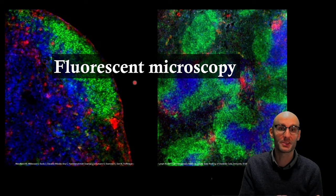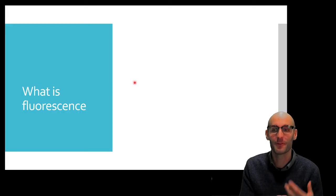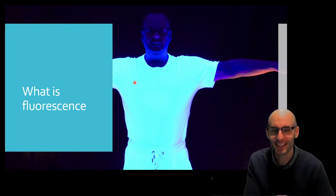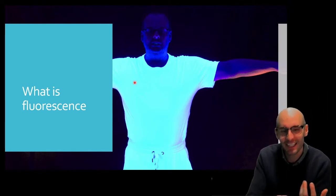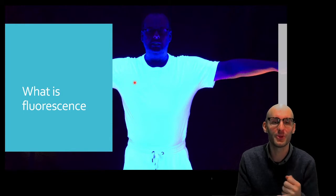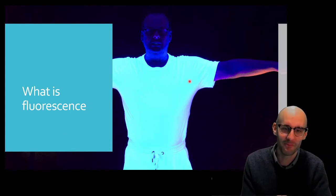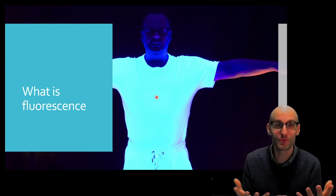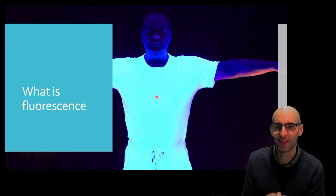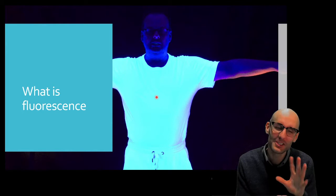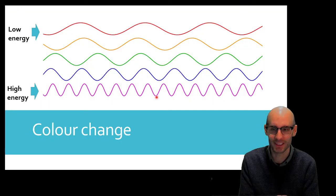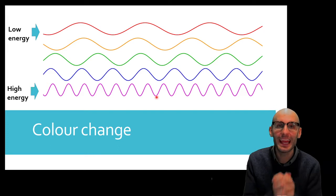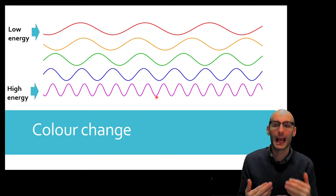To understand fluorescent microscopy, we need to understand fluorescence. So what is fluorescence? Well, fluorescence is something we've all got experience with. We've all been to the clubs, and we've all seen our white shirt glow bright blue under a black light. So we've all had some intuition and experience with fluorescence. But the key to fluorescence is that there is a color change.